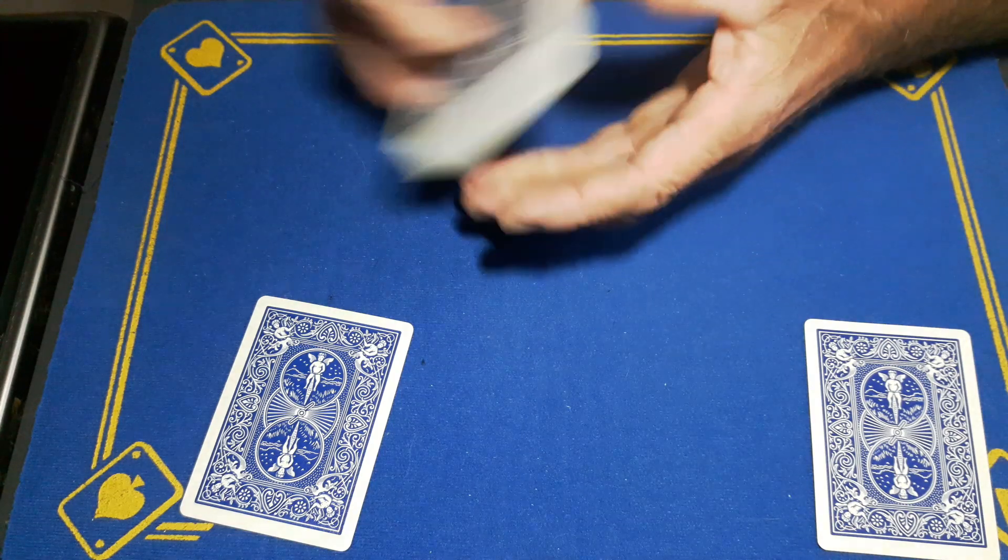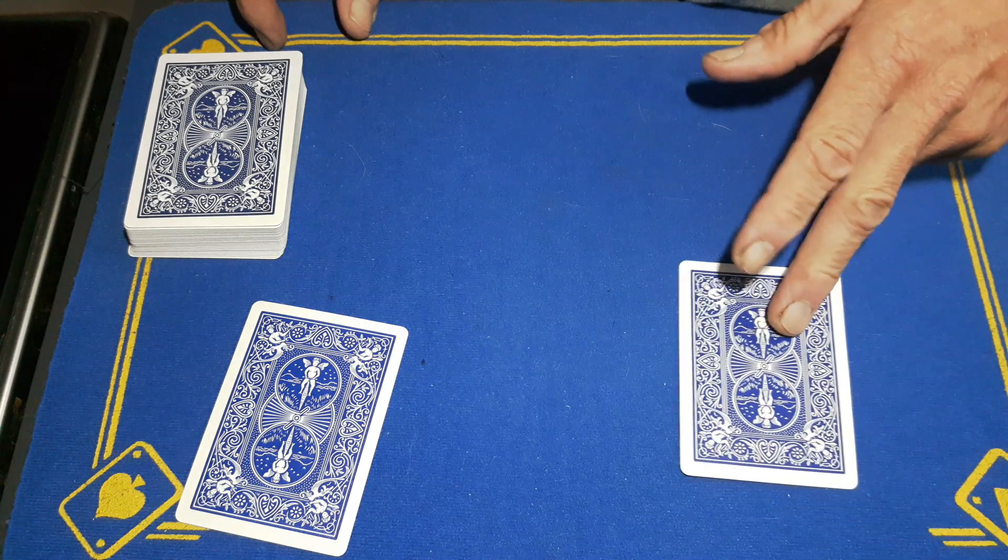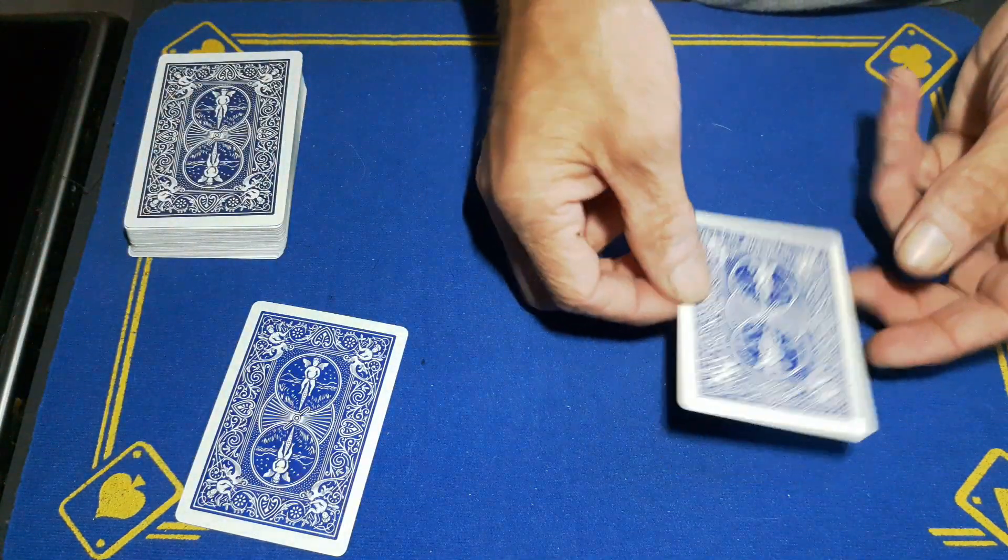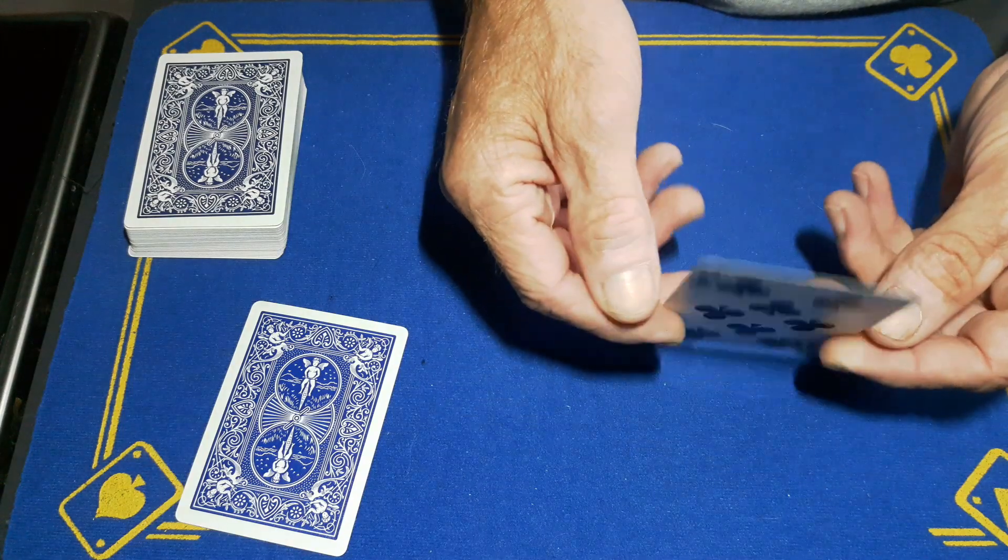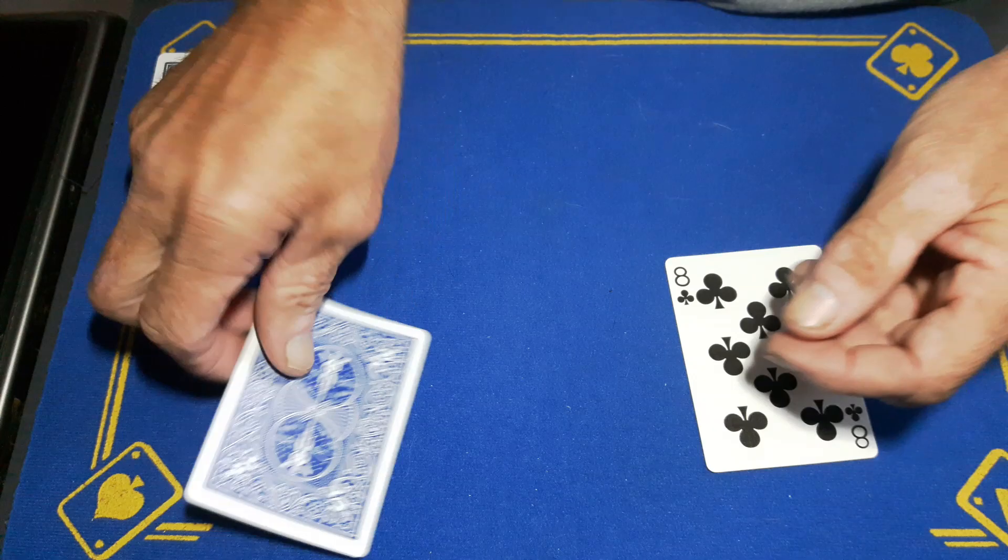It wasn't the eight of clubs, was it? Okay, but this card did appear from under the mat, and we have your signed card here. But watch. With a little wave, your card, your signed card, turns into the two of clubs.